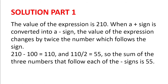Solution. The value of the expression is 210. When a plus sign is converted into a minus sign, the value of the expression changes by twice the number which follows the sign — obviously it decreases. Now 210 minus 100 is 110, and 110 divided by 2 is 55. So the sum of the three numbers that follow each of the minus signs is 55.